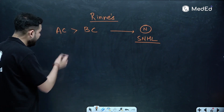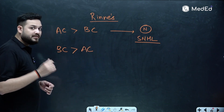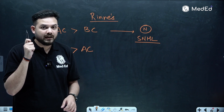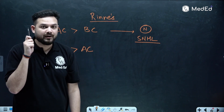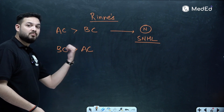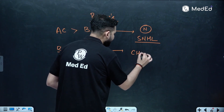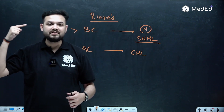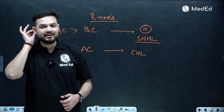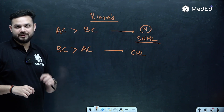If bone conduction is more than air conduction — meaning the patient still heard on the mastoid but could not hear when the fork was placed in front of the ear — that indicates conductive hearing loss. The conduction of sound from external to middle to inner ear is diseased or blocked, so bone conduction will be more. In conductive hearing loss, bone conduction is more than air conduction.